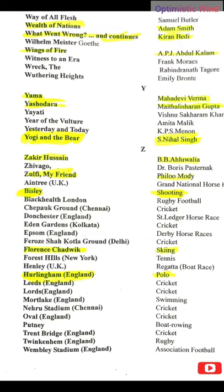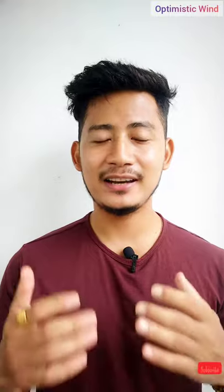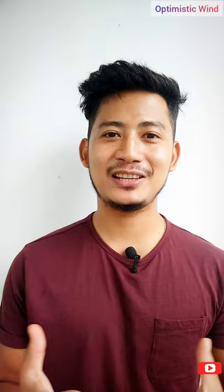Aristotle is the father of political science. What Went Wrong — written by Kiran Bedi. Wings of Fire — very famous, by A.P.J. Abdul Kalam. Yama — by Mahadevi Varma. Yashodhara — by Maithili Sharan Gupta. Yogi and the Bear — by S. Nihal Singh. Zakir Hussain — by B.B. Ahluwalia. Zulfi My Friend — by Piloo Mody. Thank you so much for watching this video. Tomorrow I'm going to upload a video on national movements, which is a really important section of GK. The video will not be lengthy — I will try to summarize everything so it will be easy to remember and write in the exam.